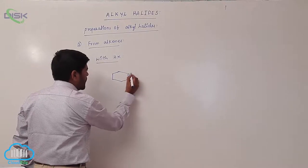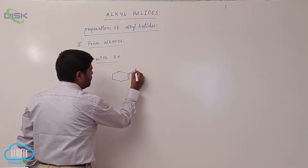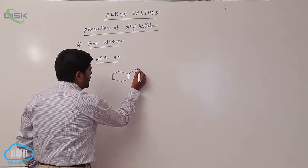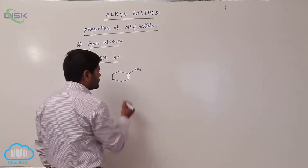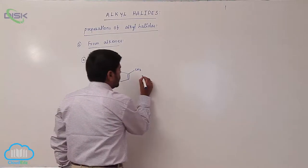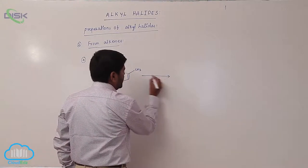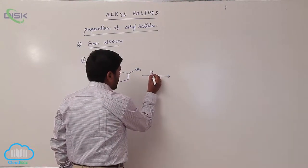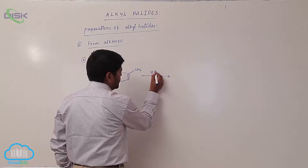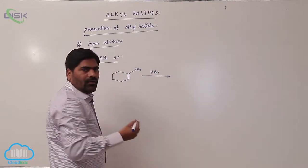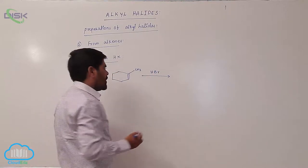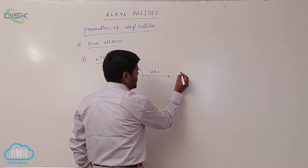Erase the double bond, then the methyl group. Now it reacts with hydrogen bromide (HBr). Markovnikov addition always takes place.